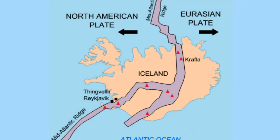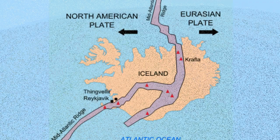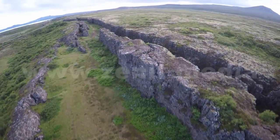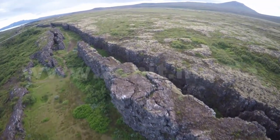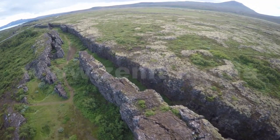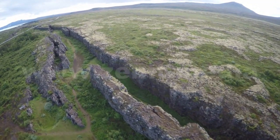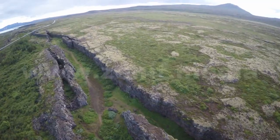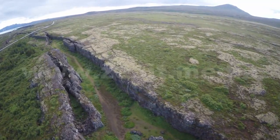Iceland splits along the mid-Atlantic ridge, at the borders of the North American and Eurasian plates. As North America moves westward and Eurasia shifts eastward, new crust is created on both sides of the boundary. As crust adds mass to Iceland on both sides, a rift along the boundary is also carved out.